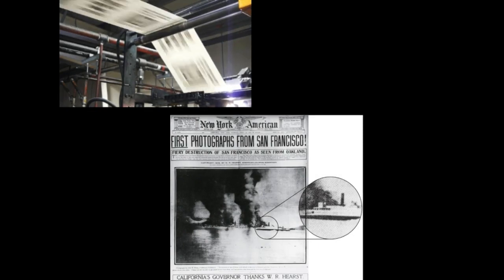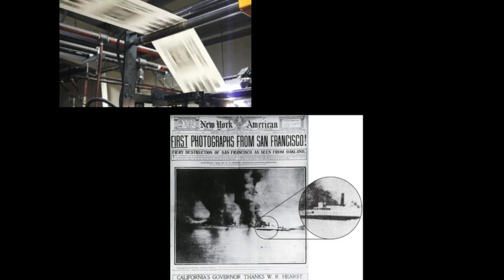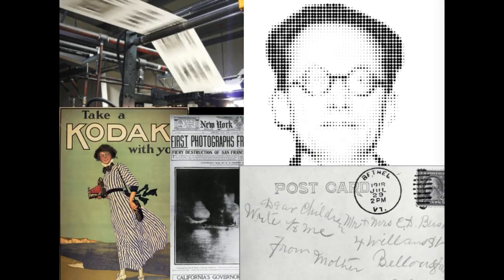In 1882, with the patenting of the half-tone process, photographic images began to flourish in print. The half-tone process made it so that photographic prints could be created through the printing press much quicker and cheaper for publication, rather than through time-consuming engravings. Images were now widely circulating in everyday modern life as stereographs, print publications using the half-tone process, and postcards.